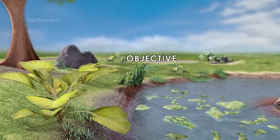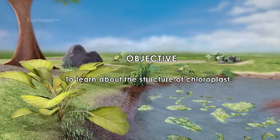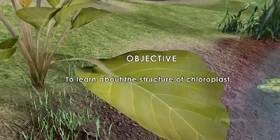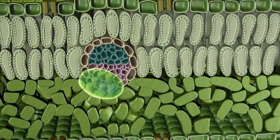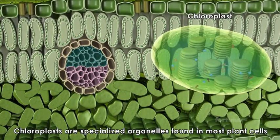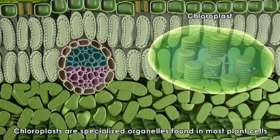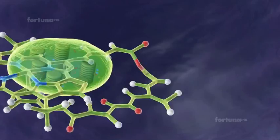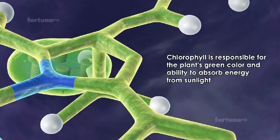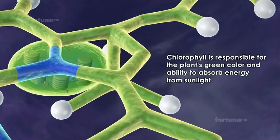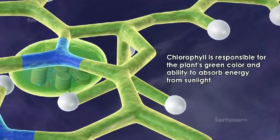Chloroplast objective to learn about the structure of chloroplast. Chloroplasts are specialized organelles found in most plant cells. They contain a pigment known as chlorophyll. Chlorophyll is responsible for the plant's green color and ability to absorb energy from sunlight.